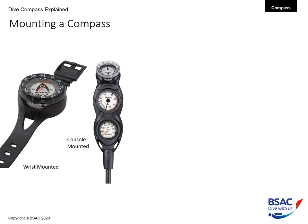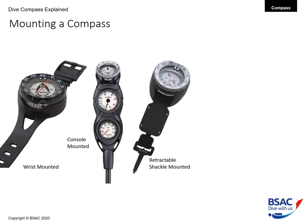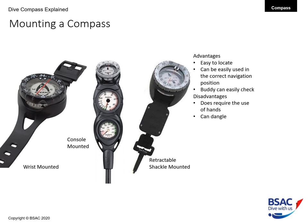We can also mount a compass on a console. The advantage is it's difficult to lose, easy to locate, and it complements the use of a depth gauge to aid navigation. However, the hose tends to be shorter than needed, making it difficult to position correctly, it promotes dangling hoses, and it is the most expensive option. You can also get a retractable shackle-mounted compass — it's easy to locate, can be easy to use in the correct navigation position, and a buddy can easily check your compass navigation. The disadvantage is it requires the use of hands and can dangle from your scuba gear.